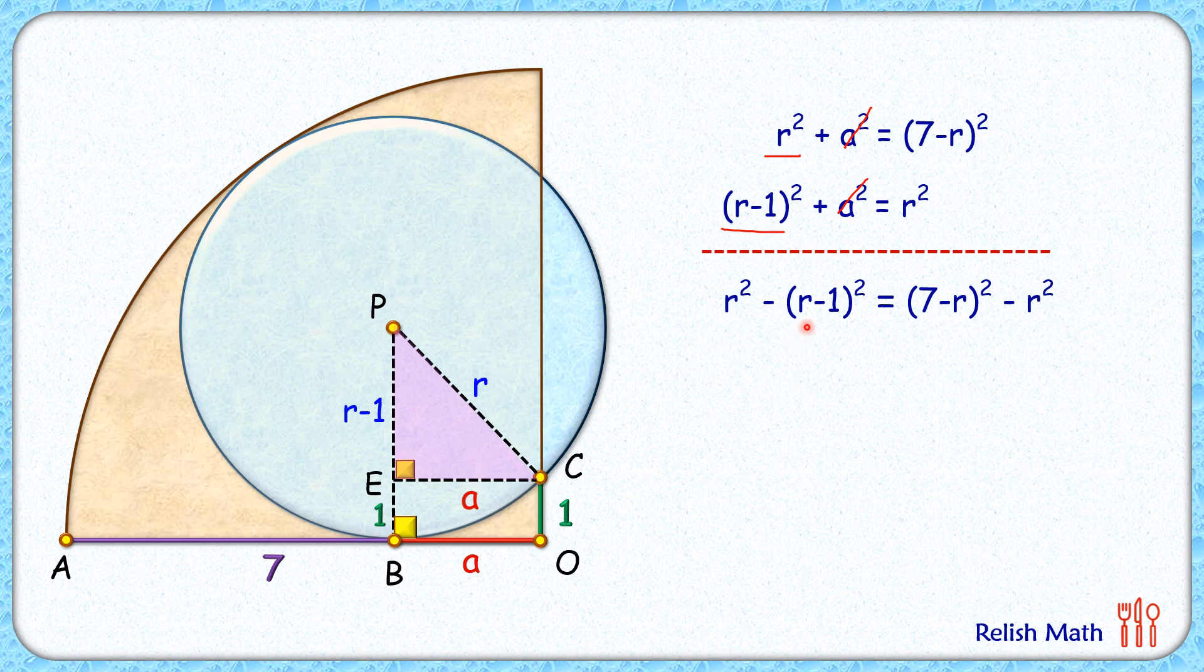Both sides, let's open the brackets applying the (a-b)² identity. So we'll get this equation. Both sides, we'll see that r² is getting cancelled down. Simplifying it, we'll get 16r = 50.